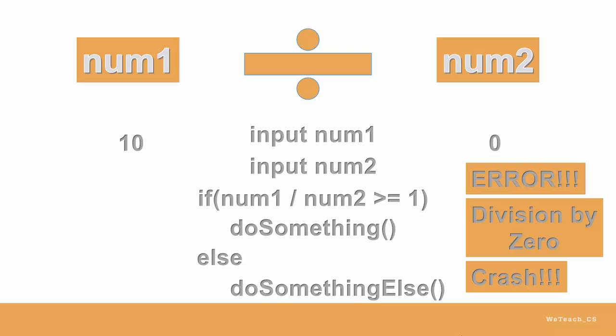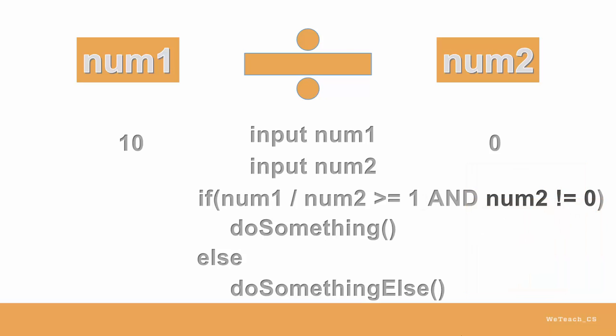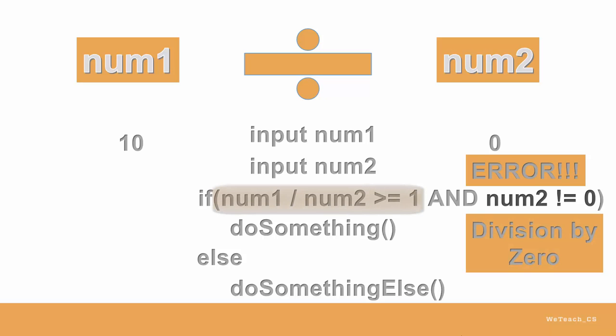To prevent this from happening, a protection expression can be included in the IF statement, like this, which at first glance seems to do the trick. If NUM1 divided by NUM2 is greater than or equal to 1, and NUM2 is not equal to zero, seems logical enough. Well, it doesn't work. The compile process evaluates one part at a time, in order from left to right. The problem remains, because the first part that is evaluated would still cause the division by zero error, despite the second part seemingly protecting against that problem.